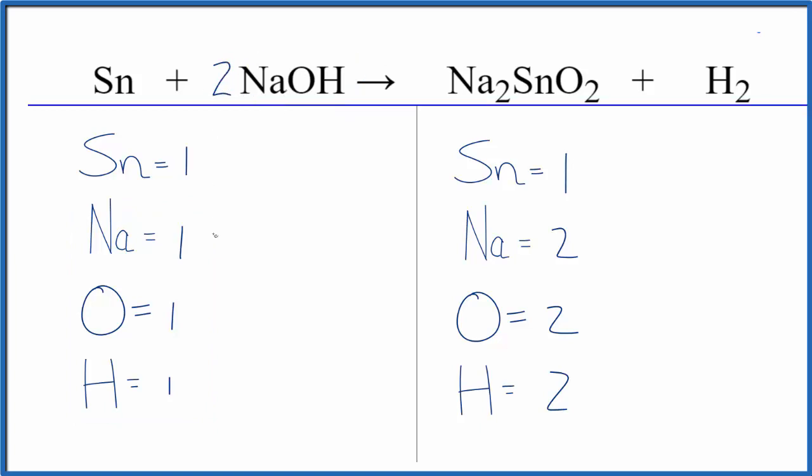One times two gives us two sodiums, one times the two gives us two oxygens, and one times the two gives us two hydrogens. This equation is balanced. I'm not entirely sure of the states here.